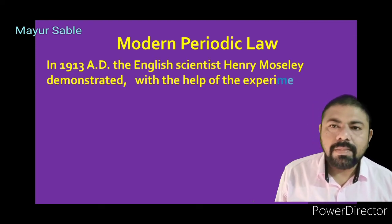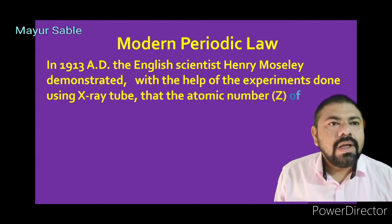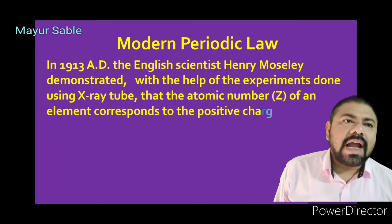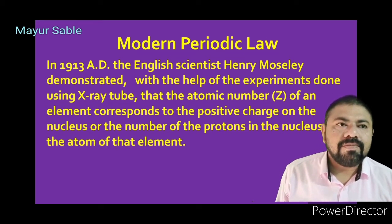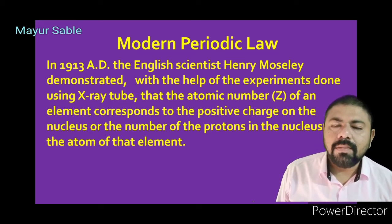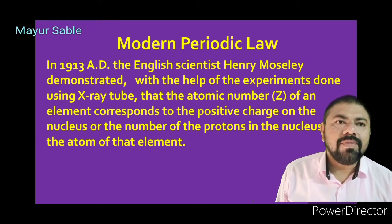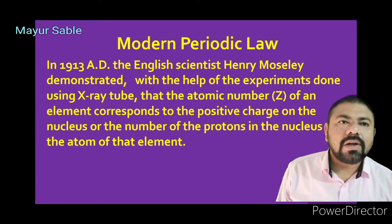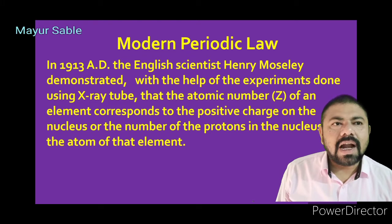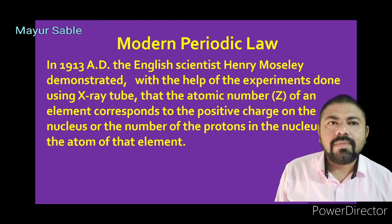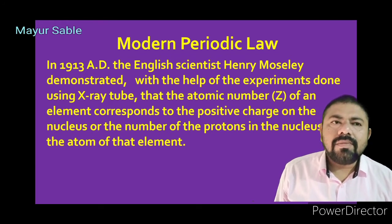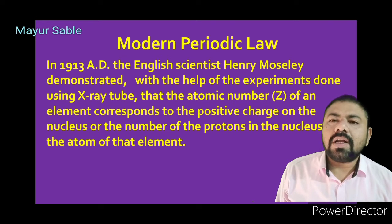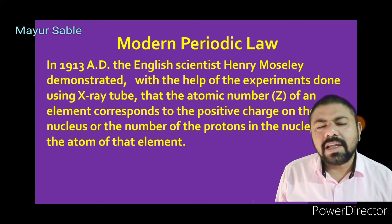The scientific world didn't know anything about the interior of the atom when Mendeleev put forward his periodic table. After the discovery of the electron, scientists started exploring the relationship between the electron number of an atom and atomic number. In Mendeleev's periodic table, the atomic number only indicated the serial number of the element — nothing else.